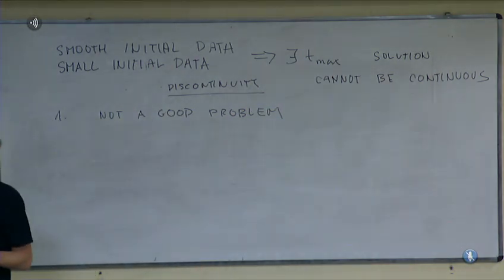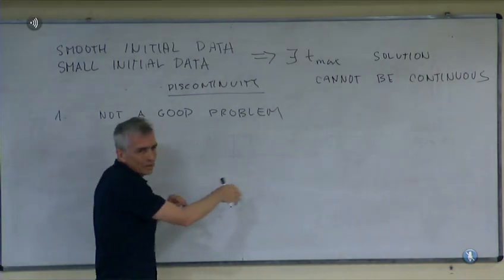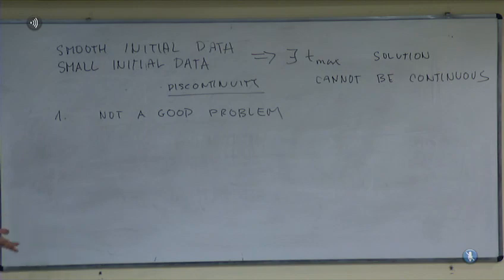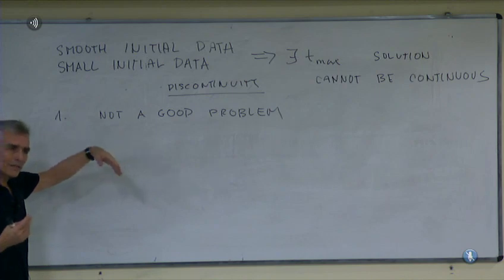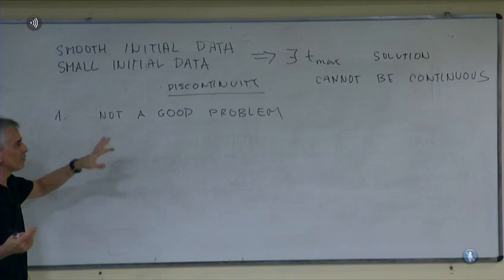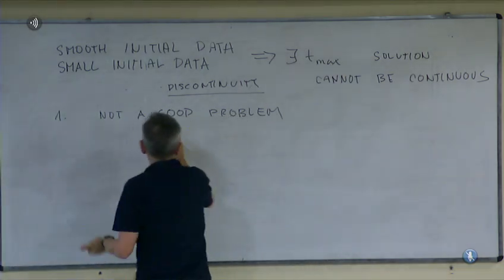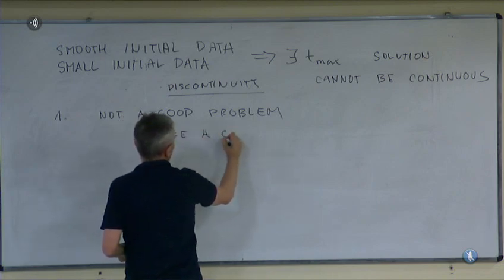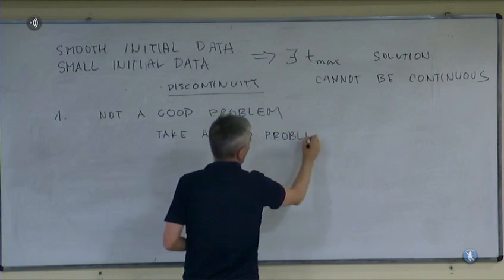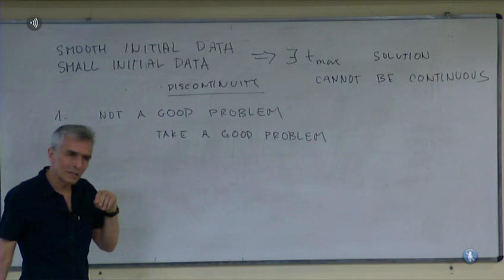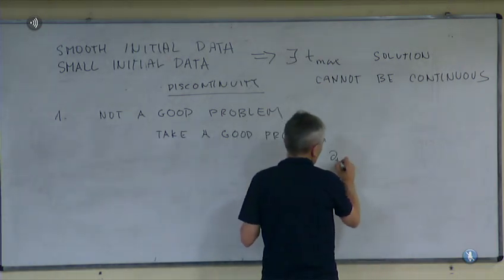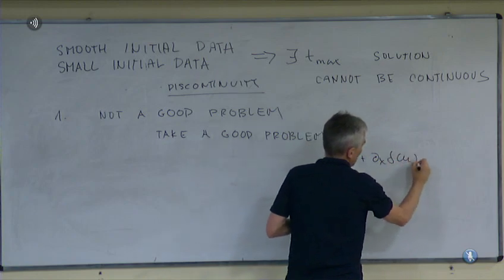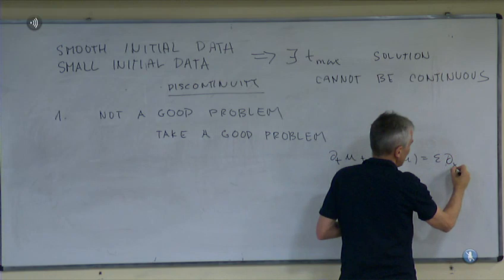What would be a good problem? In fluid mechanics, the good problem would be the viscous one: the Burgers equation with epsilon times d^2u/dx^2 on the right — artificial viscosity, analogous to replacing Euler with Navier–Stokes. For this parabolic problem, there are no shocks, and this is a well-posed problem with smooth solutions. As epsilon is small, solutions of this problem approach these shocks. Some engineers would say: we observe shocks, for instance in supersonic planes exceeding the speed of sound where compressibility creates observable shocks.